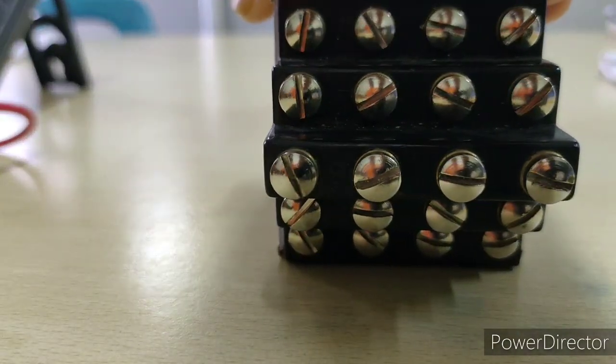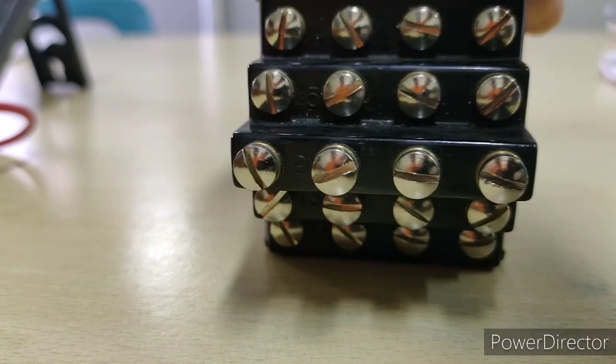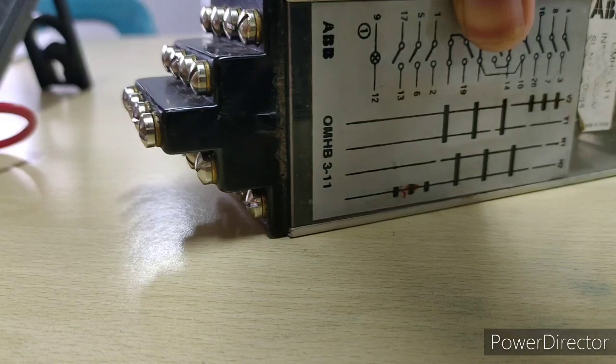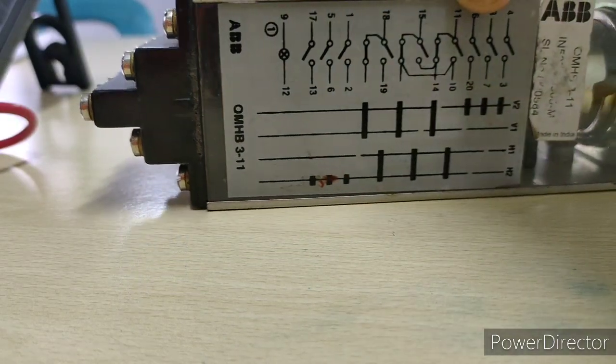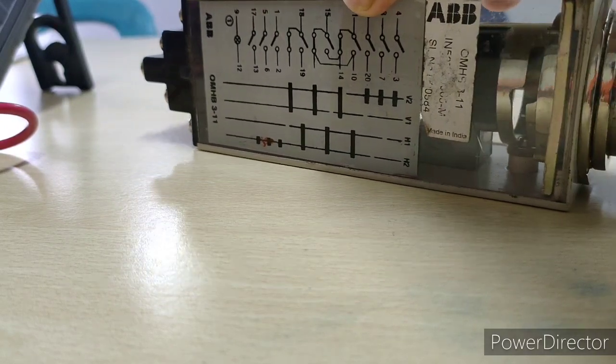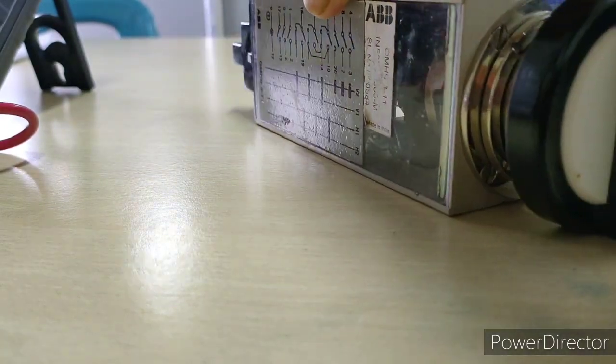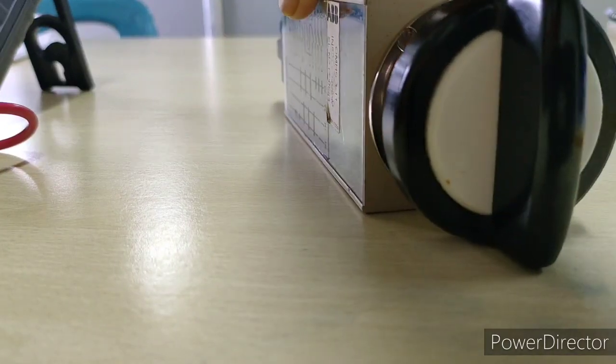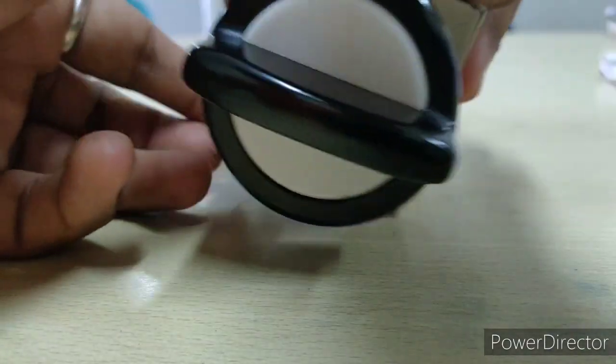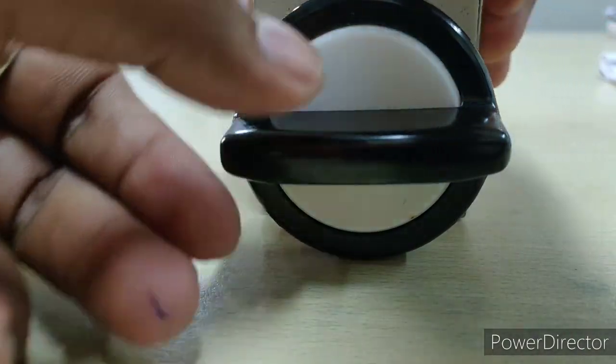Now I'm showing you the backside connection nuts where we connect the DC and also get the tripping and closing contacts. This is the on/off contact and I'm rotating the discrepancy switch for a 360 degree view. This is the on position of the breaker, this is the right position for the breaker.